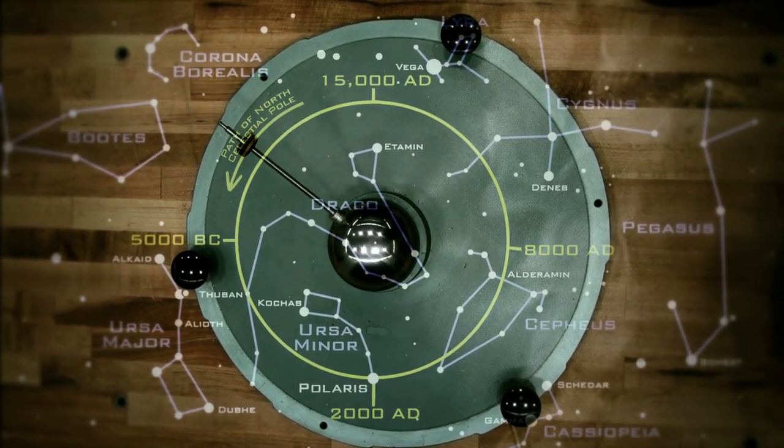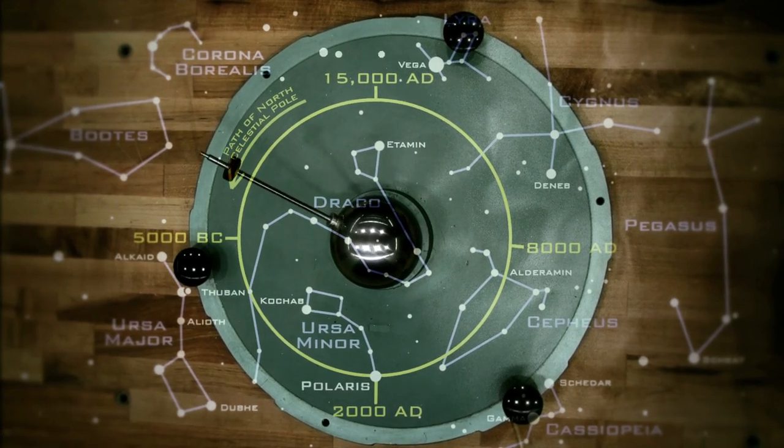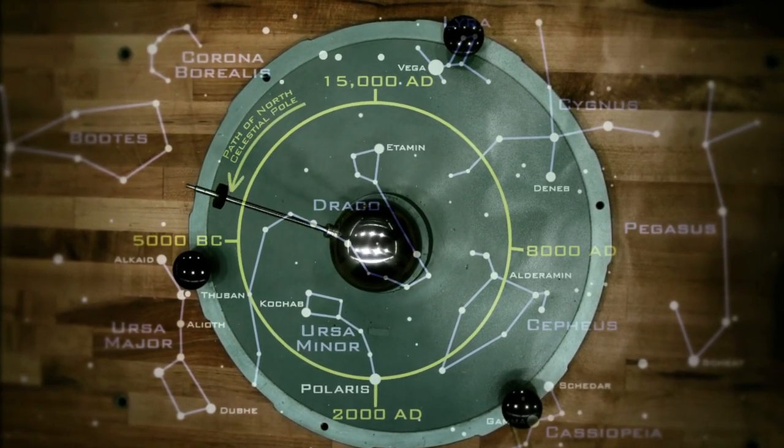So although right now we have a fairly bright star in Polaris near the north celestial pole, that will no longer be true in about a thousand years.